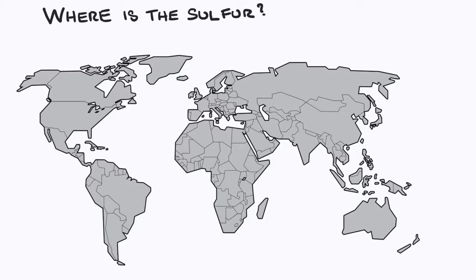So where do we find sulfur? Well, sulfur naturally occurs as deposits of free elements in volcanic and sedimentary areas in Italy, USA, Russia, and in the UK.